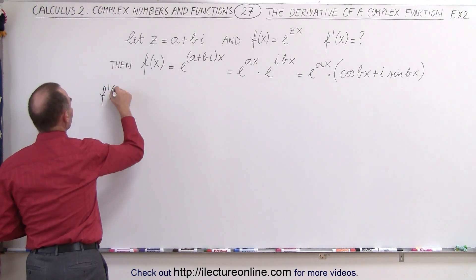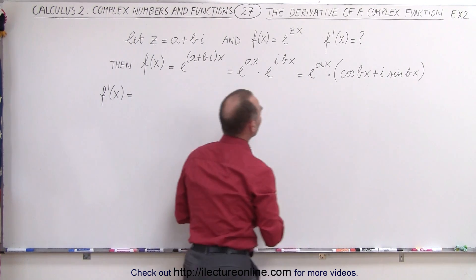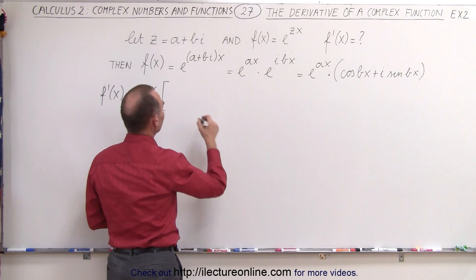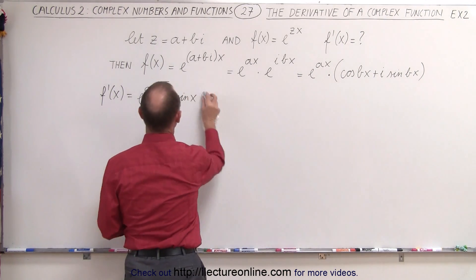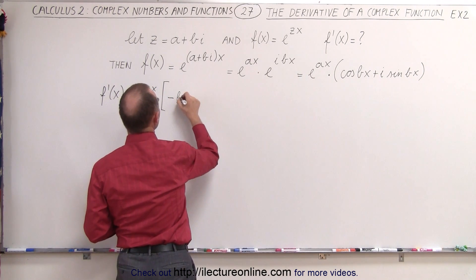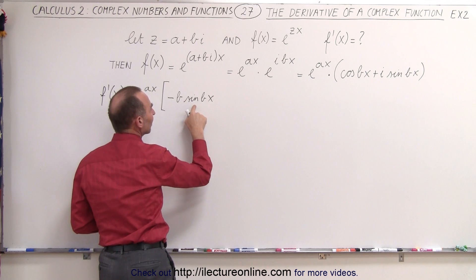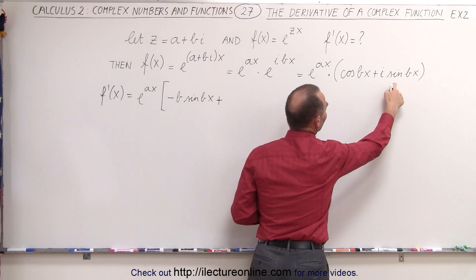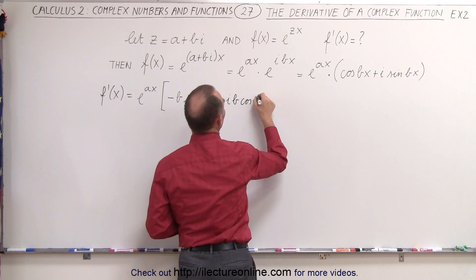So we're going to take f prime of x, which is equal to the derivative of this product: e to the ax multiplied times this. So that means we take the first, e to the ax, times the derivative of the second. The derivative of the cosine of bx is minus b times the sine of bx, because the derivative of cosine of bx is negative sine of bx times the derivative of the angle, which is b. Then plus i times b times the cosine of bx, since the derivative of sine of bx is cosine of bx times the derivative of the angle.